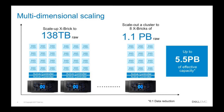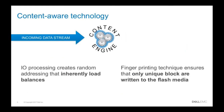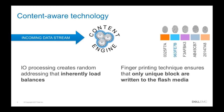So what is the secret sauce for XtremIO? We do not store any data that is not unique across the entire cluster, and we do not store data based on its logical address. What we do is look at each incoming data block, apply a secure hash algorithm to determine its fingerprint, and check whether we have seen that data before — whether it's unique. Data streams come in, we chunk it, look at those data blocks, and generate the fingerprint, which we can represent as hexadecimal numbers.